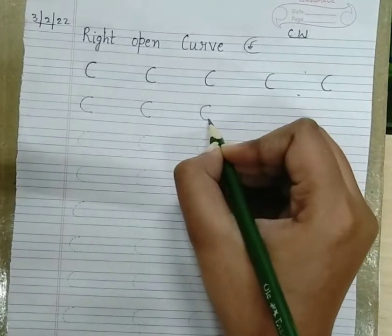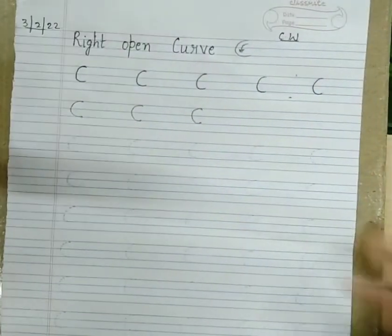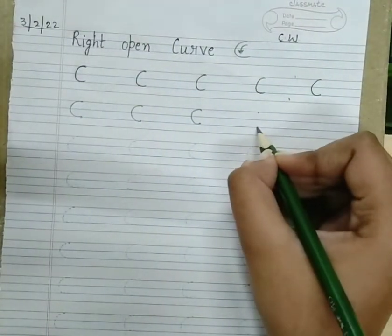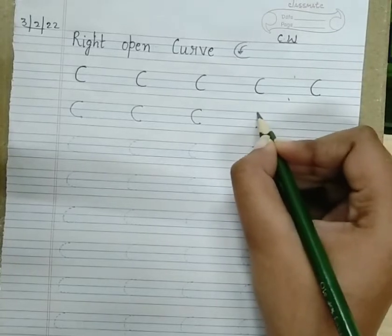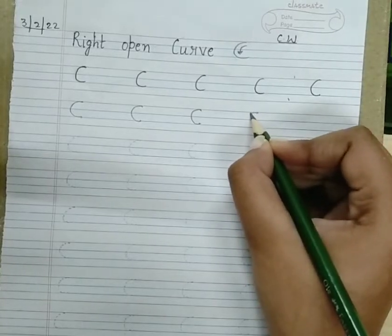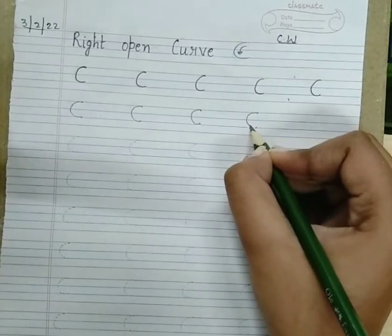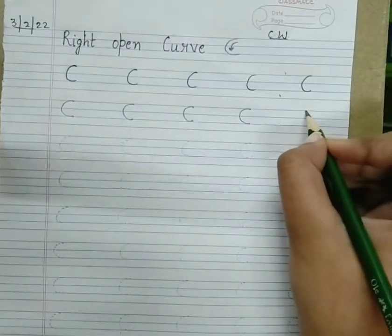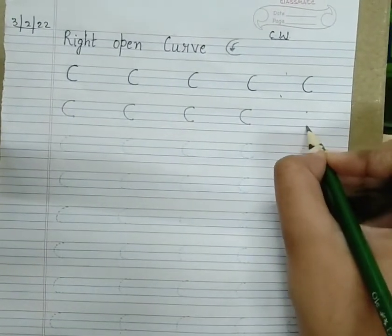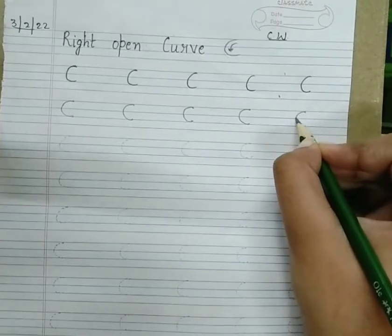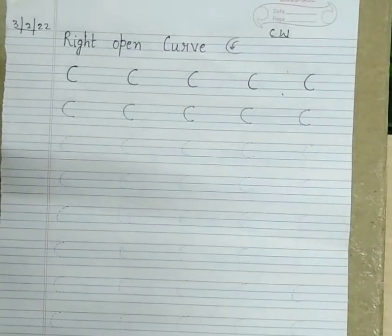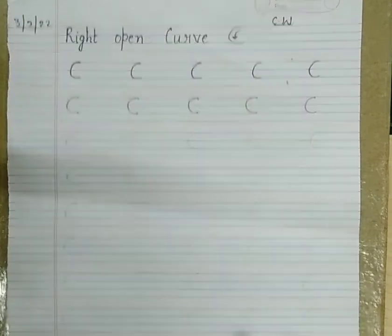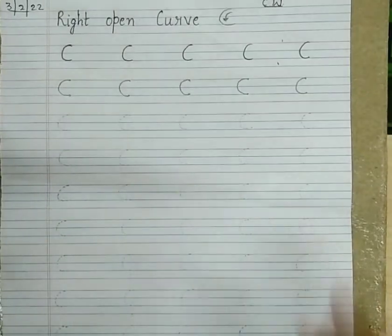Take it towards your right side, towards your right side. Again, two dots, and in this manner you are going to make a right open curve. This is how you will make a right open curve.